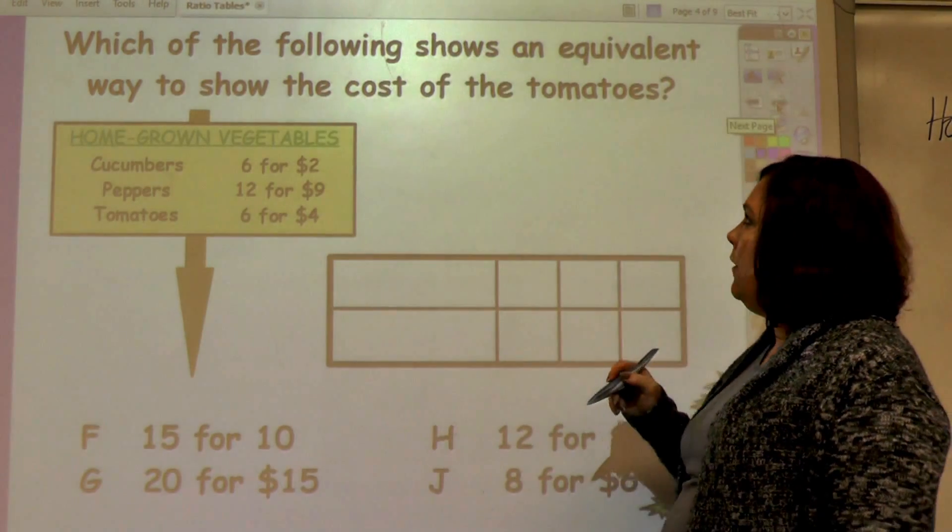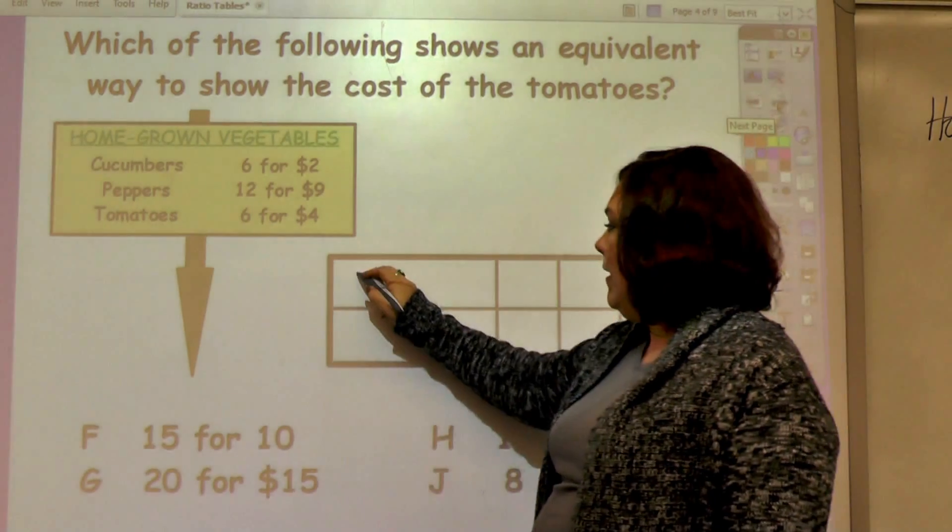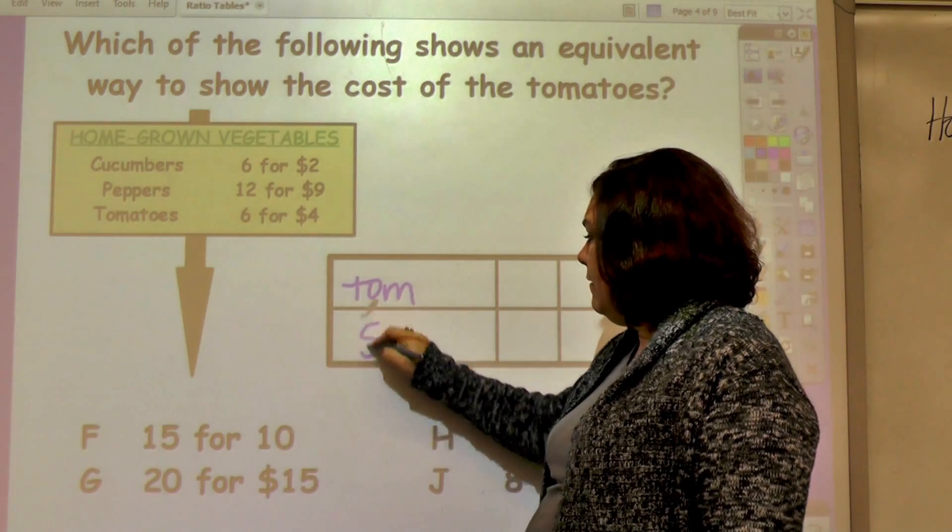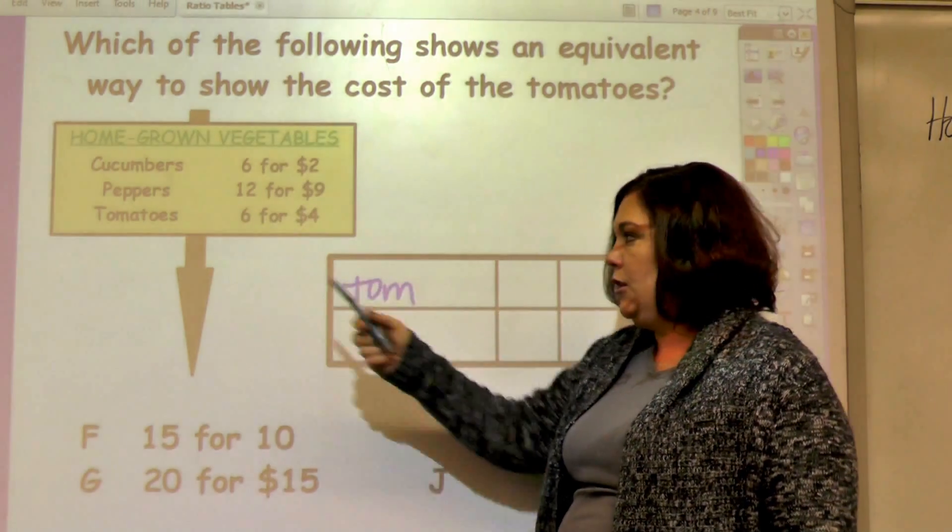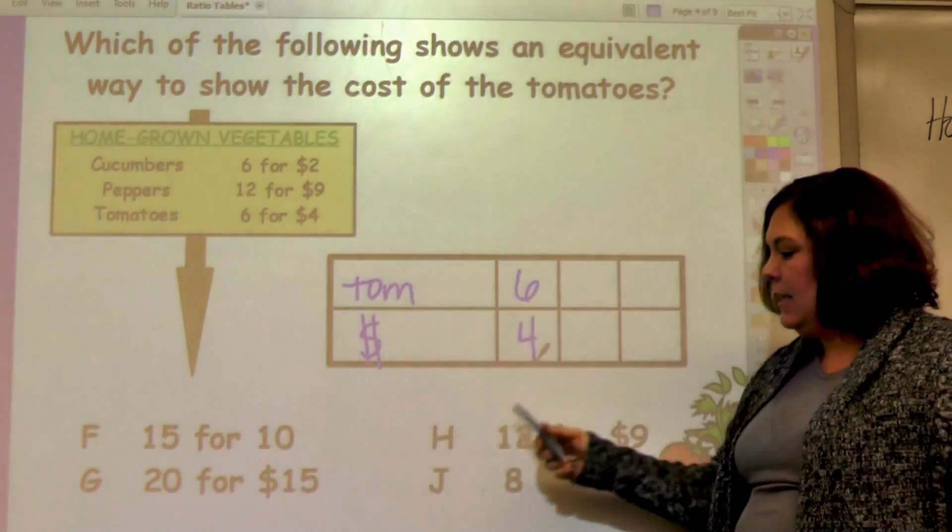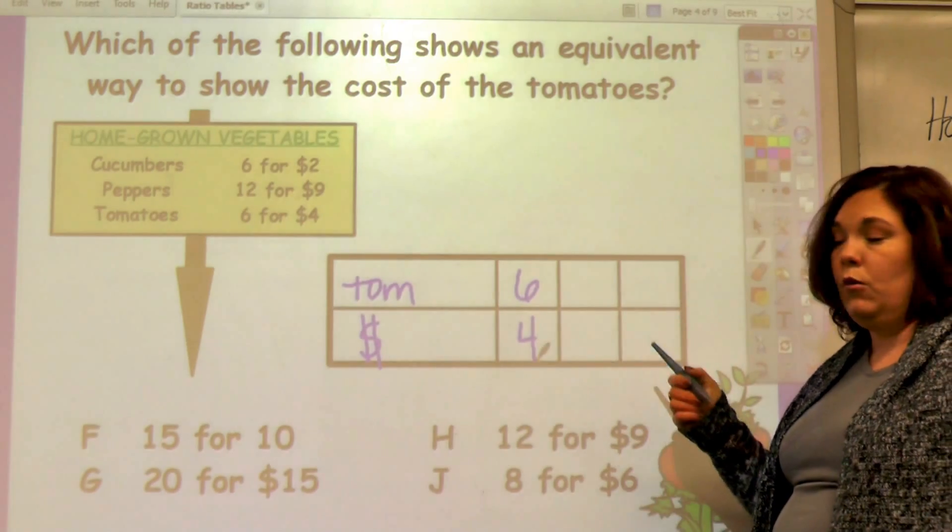Which of the following shows the equivalent way to show the cost of tomatoes? So I'm comparing tomatoes to money, and here's my information. I can get six tomatoes for four dollars. So I have to put each of these in and find out which one works.